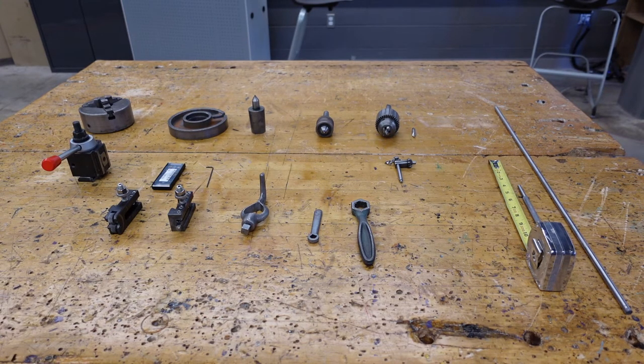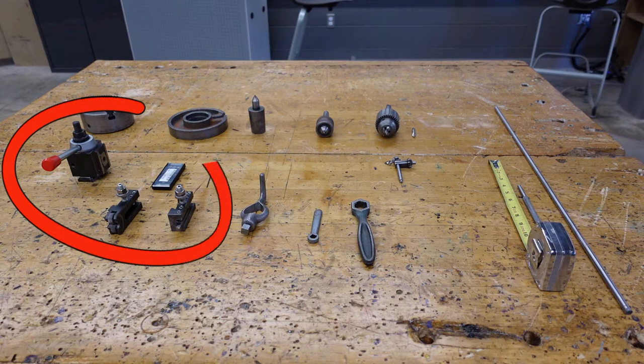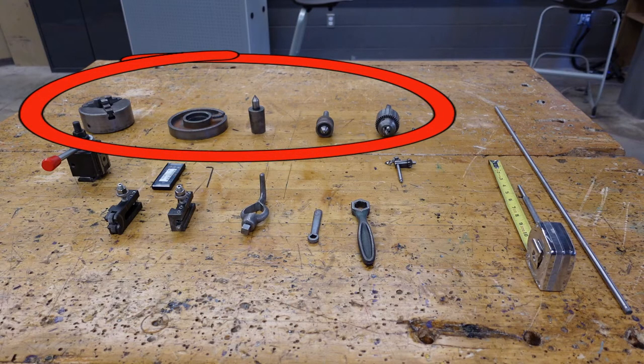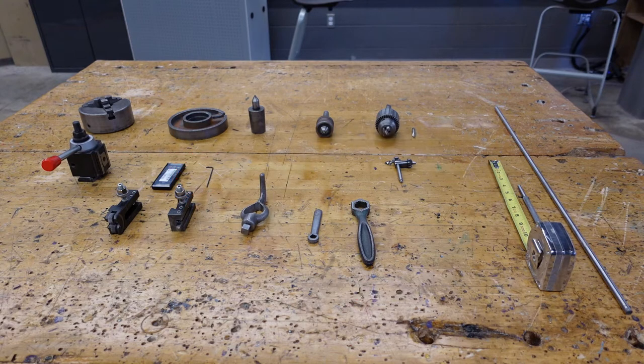Let's take a minute and talk about some of the tools we're going to be using to create our center punch. We're going to divide it into two categories: how we cut the material and how we hold the material. There is a third sub-category of how we tighten these things, but that's not going to be covered too much in this video.